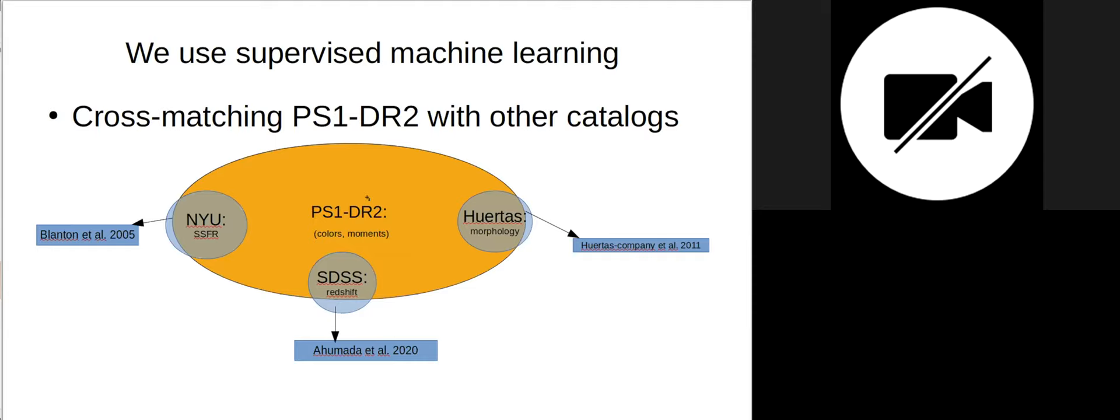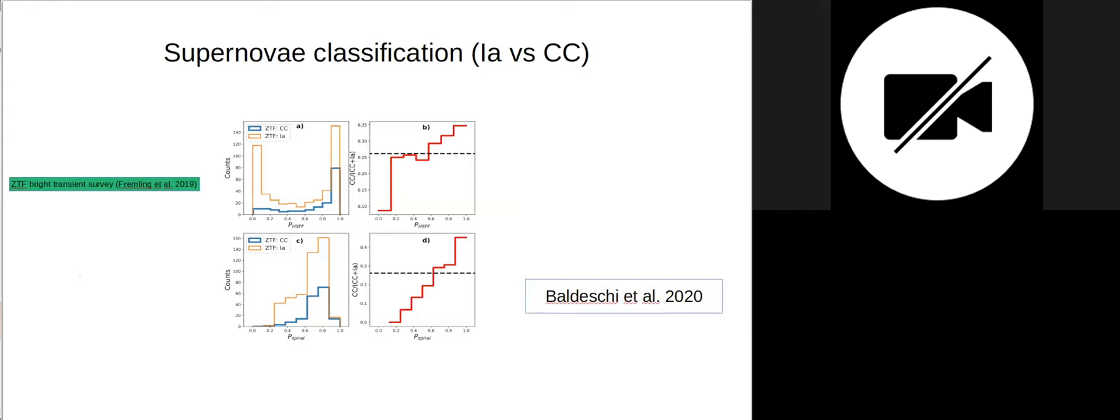So at the end, eventually we released a catalog where for each Pan-STARRS galaxy, we released this score. This probability of being elliptical, being spiral, probability of being highly star forming. All the detail of the machine learning details are in this paper that was recently, a few days ago, published on APJ. But at the end, we also want to know if this is actually useful for supernova classification.